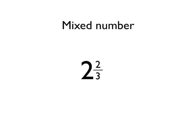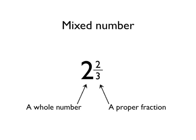This is a mixed number. We call this 2 and 2 thirds. Mixed numbers are called mixed numbers because they literally are a mix of two different things — a mix of a whole number and a proper fraction.